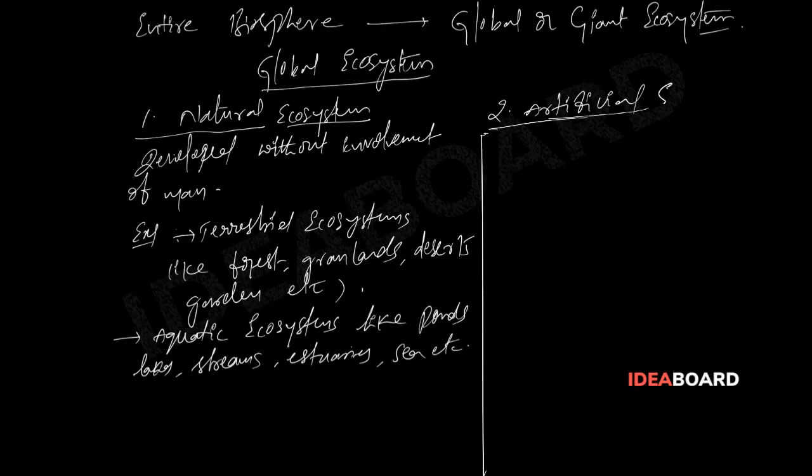Next, artificial ecosystem. An ecosystem which is created or maintained by man or humans is called artificial or manmade or anthropogenic ecosystem.